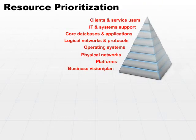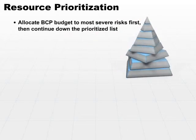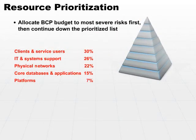We want to come back and look at our prioritized list. Then we take our business continuity planning budget and allocate the first chunk of money to the most important business function. What we're trying to do is allocate a limited amount of our budget to address and ensure the continuity of our top business function.